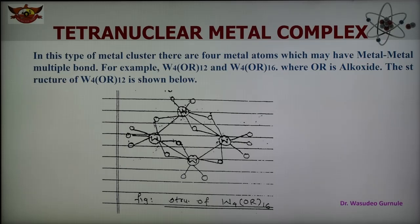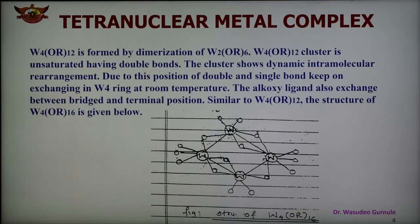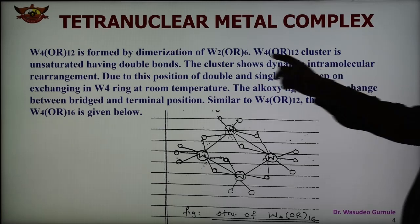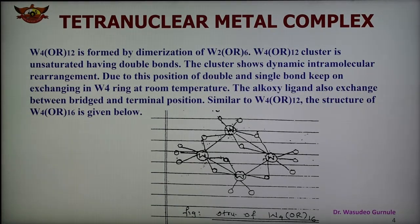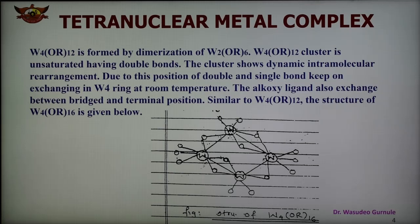The structure of W4OR12 is actually a dimer of W2OR6 — that is the monomer. Dimerization gives W4OR12. This W4OR12 cluster is unsaturated, containing double bonds, and shows dynamic intramolecular rearrangement. The positions of double and single bonds keep exchanging in the W4 ring at room temperature, and the alkoxide groups also exchange between bridging and terminal positions.